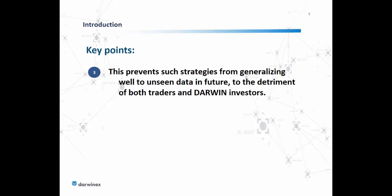This is to the detriment of both traders and Darwin investors, because traders employing real capital with potentially overfit strategies is a problem, and Darwin investors backing a Darwin with real capital that could have an overfit underlying strategy is also a problem. So both parties are negatively impacted when an overfit strategy is in play.